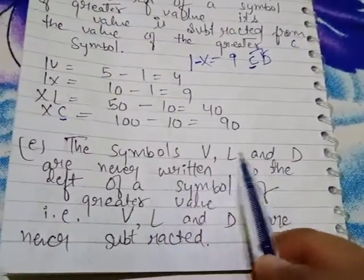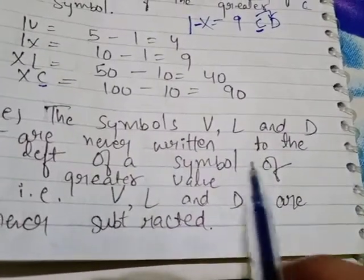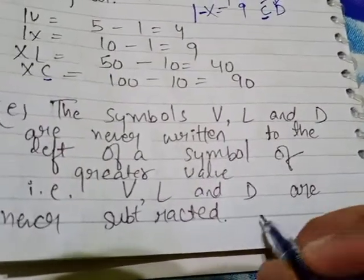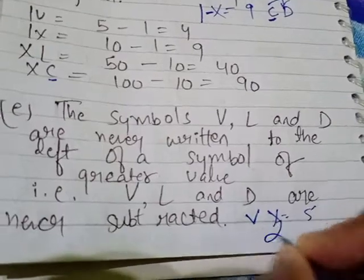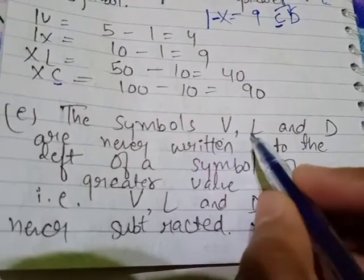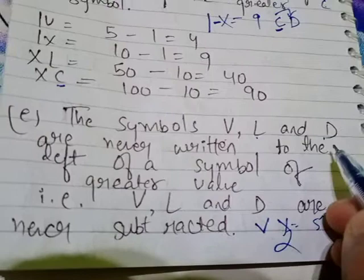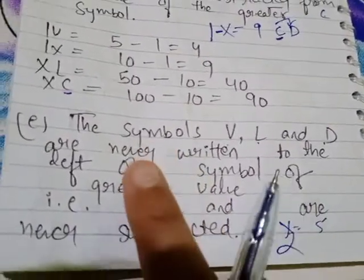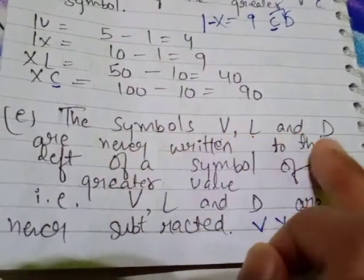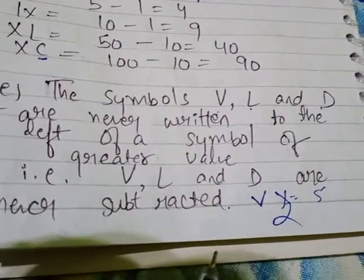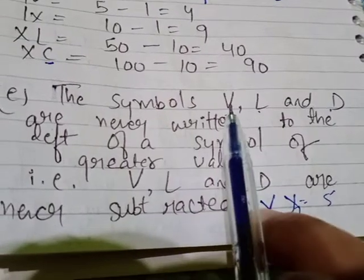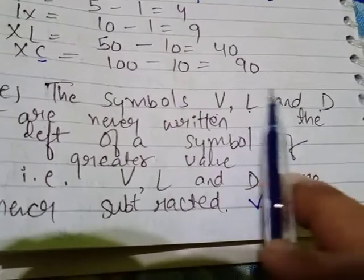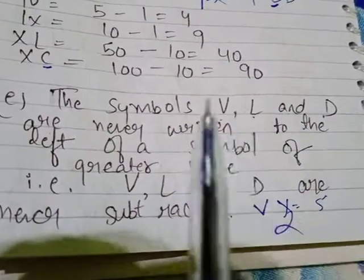Very important point: symbols V, L, and D are never written to the left side of a greater value symbol. For example, V is smaller than X, but we cannot write V to the left of X — VX is not valid. These three symbols V, L, and D can never be written to the left side of any bigger number. We cannot subtract these symbols.